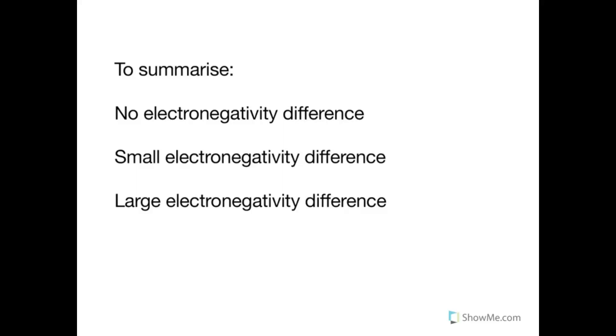To summarize then, if there is no difference in electronegativity, you have a pure covalent bond. If there is a small difference, and remember by small we're talking less than 1.67, then you have a polar covalent bond. If there is a large difference in electronegativity, so we're talking greater than 1.67, now you have an ionic bond.